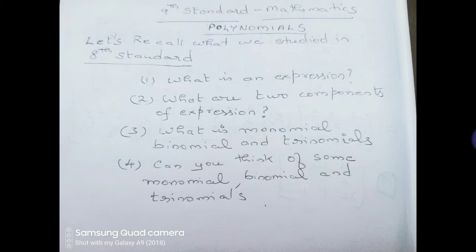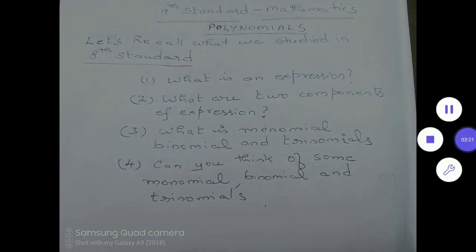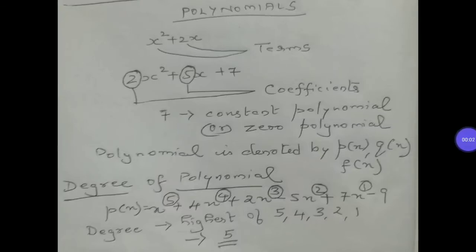That is the recap for algebraic expressions studied previously. Now I will move on to polynomials — the ninth standard second lesson in your book. Now let us start with the lesson polynomials. Consider the expression x² + 2x: x² is a term, 2x is a term — both are terms of the polynomial.